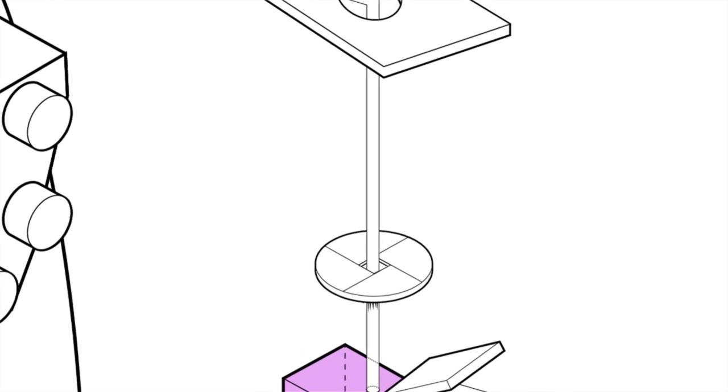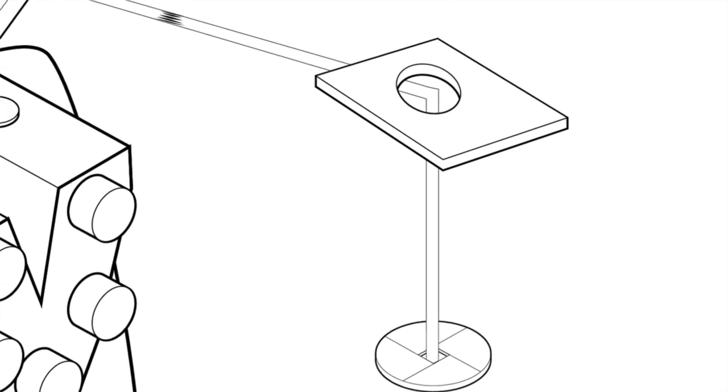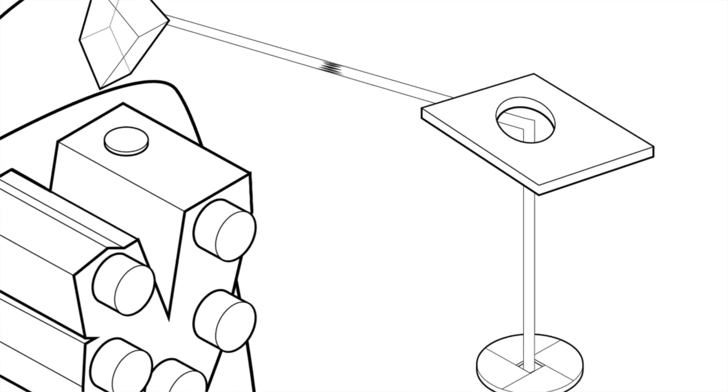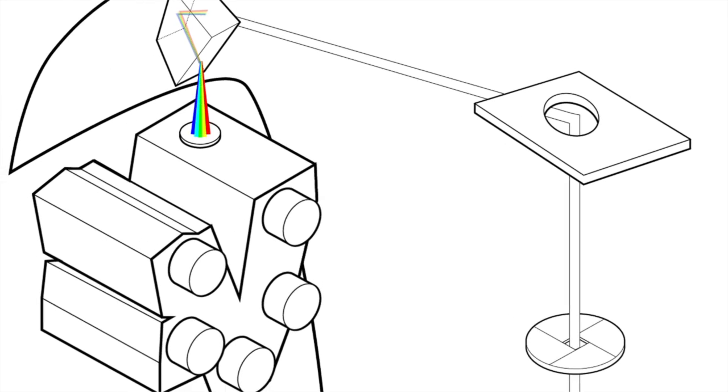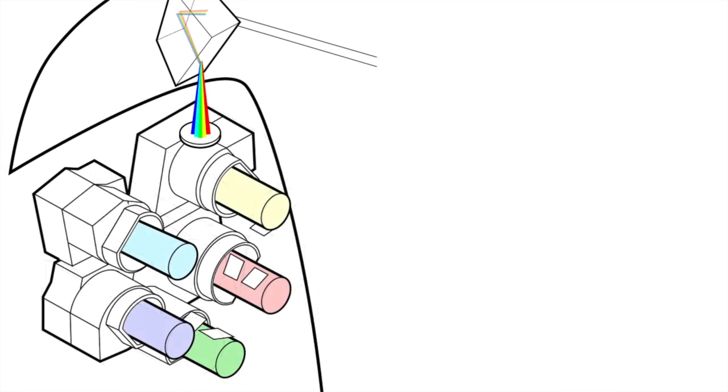Once past the beam splitter, the emission light reaches the Leica spectral detector system which provides highly efficient dispersion and detection of the full emission spectrum.